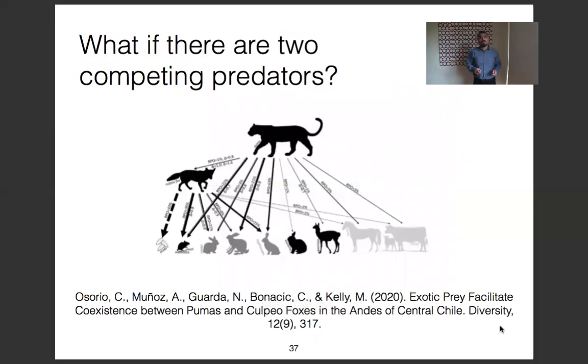Modeling predator coexistence from field data: in the system there are two, the puma, which is the apex predator, and the Andean fox, the meso-predator.